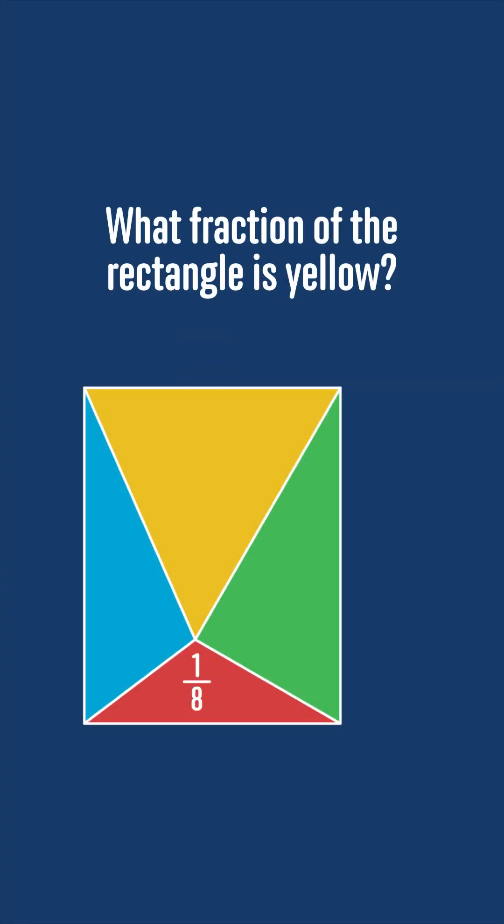To see this, we'll use a strategy that's often very useful for these sorts of problems. We'll add a horizontal and a vertical line like this, and split the rectangle into lots of smaller sections.